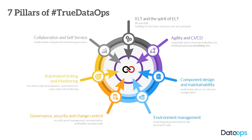Governance, security, and change control is probably the pillar most aligned with traditional DevOps, because the requirements are similar. We need to see — down to the individual line of code, configuration, or even character — who changed what, when, where, why, what else they changed at the same time, who peer-reviewed and approved it, what the automated test results were, when it was deployed to dev, QA, and production. We also have capabilities around anonymization and collaboration self-service.